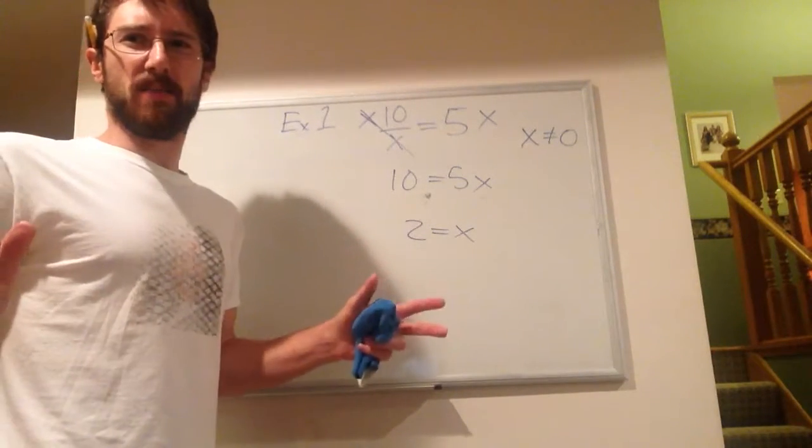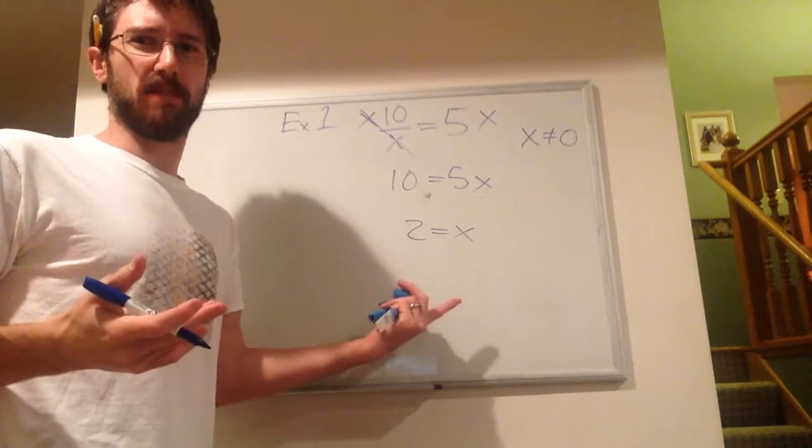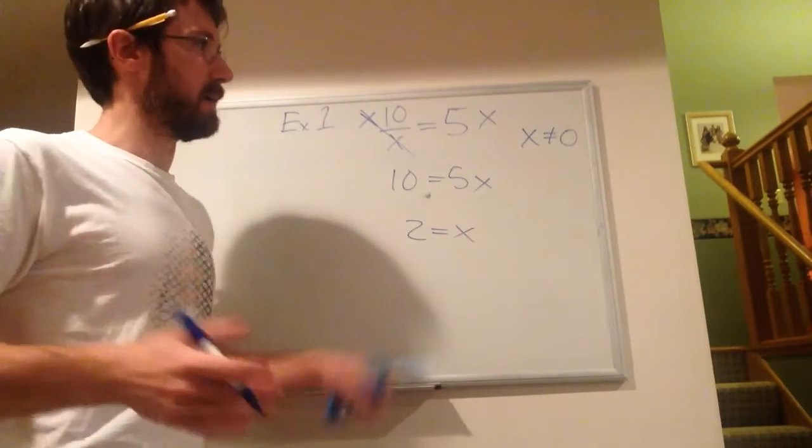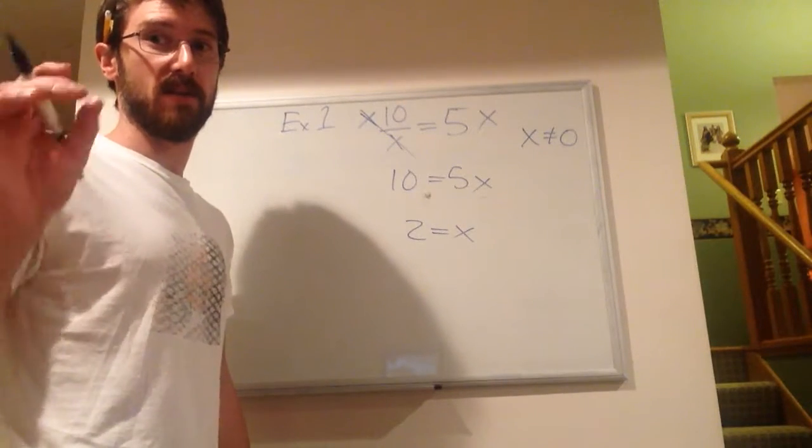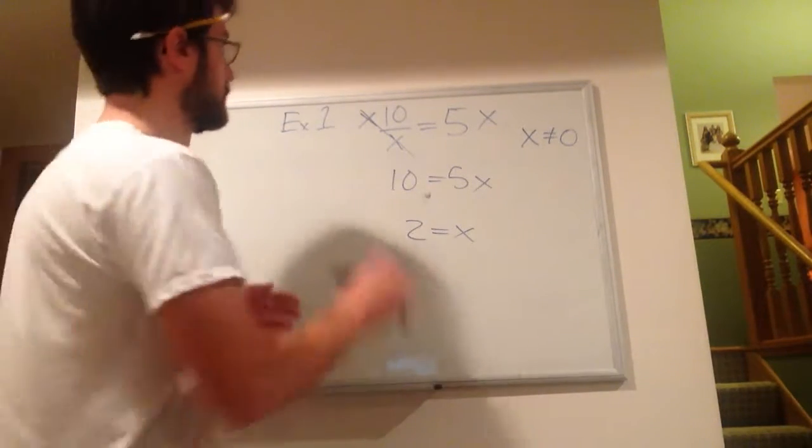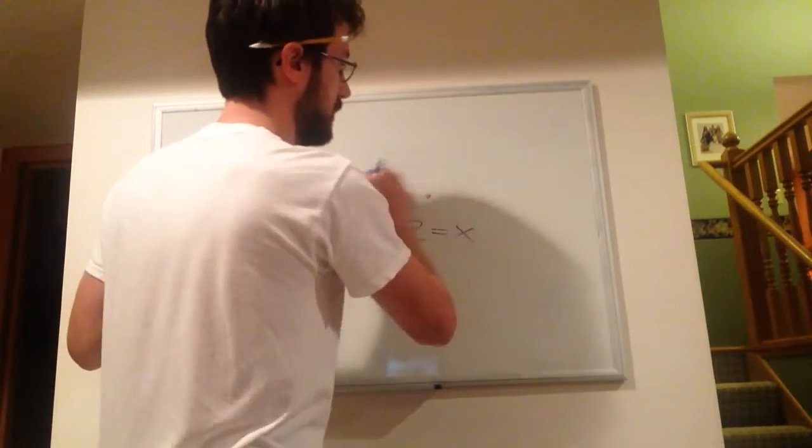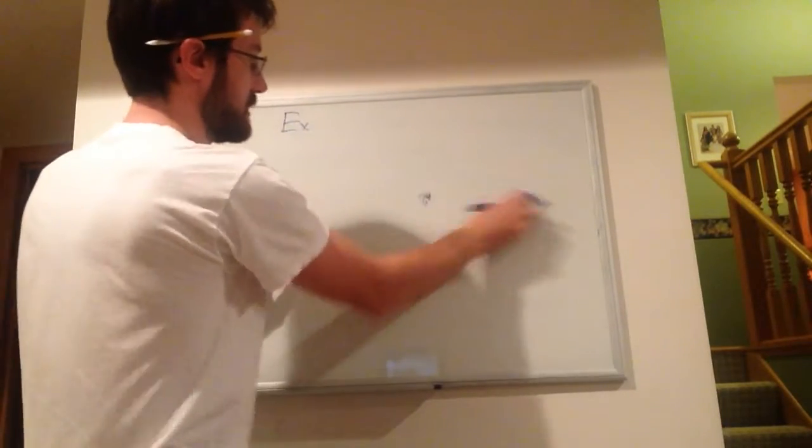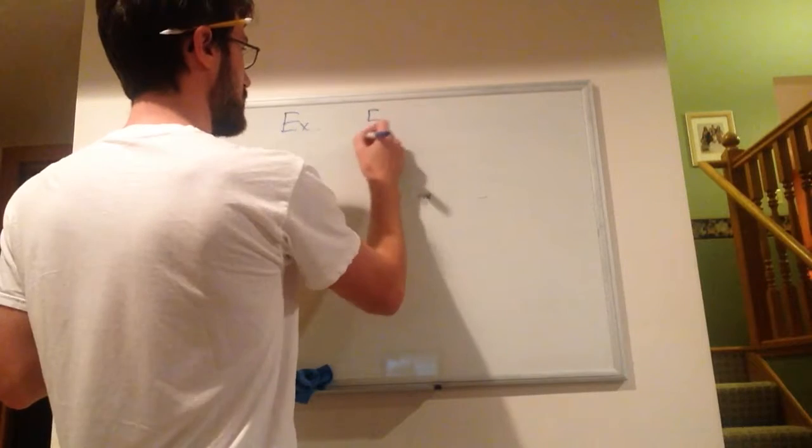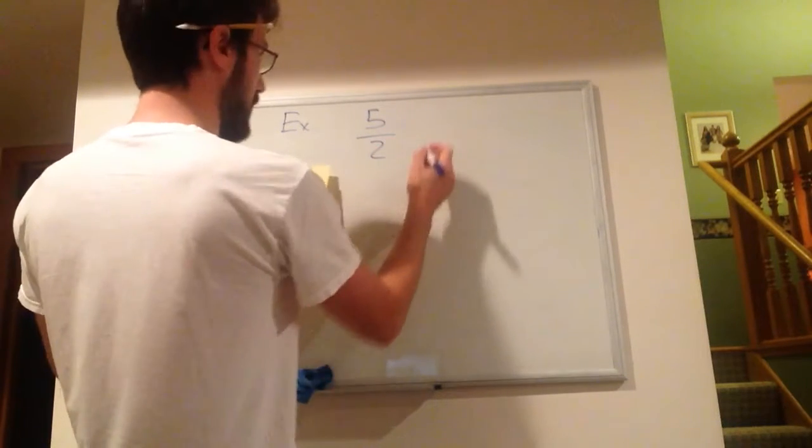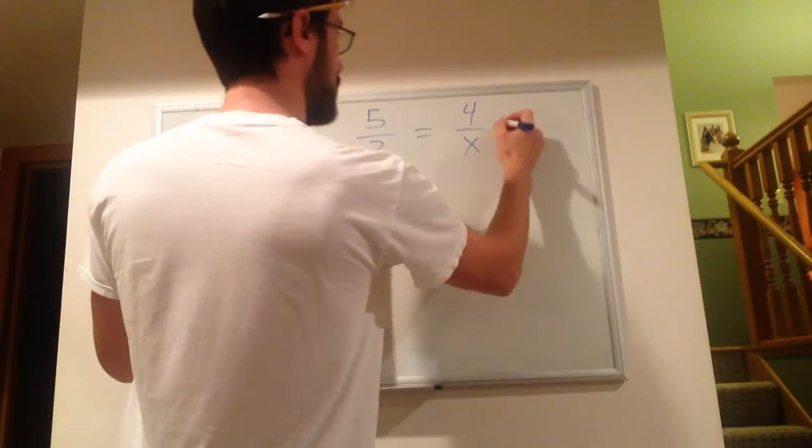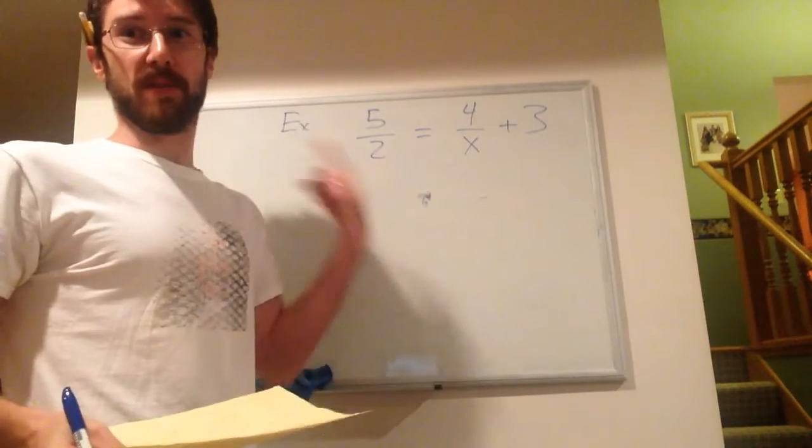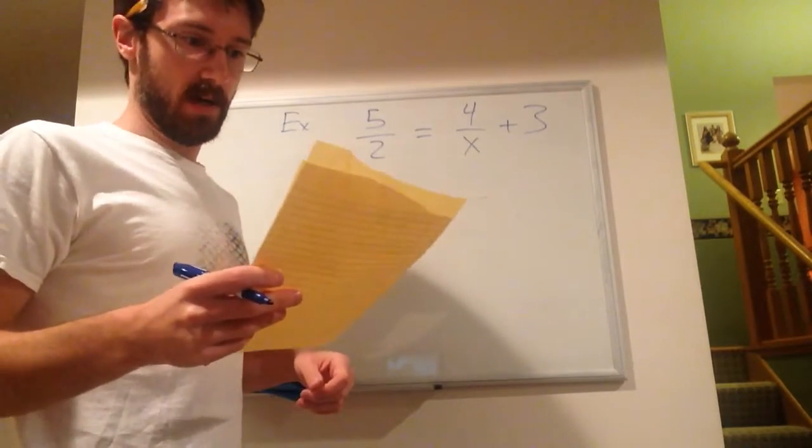Alright, if at any time we need to pause so people can catch up, because I write kind of fast, that's fine. Please have the sub do so, or if you're watching it on your own device, do so to get caught up. Alright, example two. That was the easy one. Now we're going to get a little more difficult, and we're going to do this. Two different denominators. 5 over 2 is equal to 4x plus 3. Yeah, this is really my basement. That was my dryer that just buzzed.